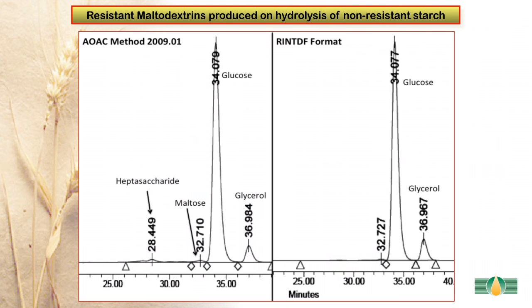Another problem with AOAC method 2009.01 is that under the incubation conditions employed, a resistant maltodextrin fraction is produced from non-resistant starch and this is measured as dietary fibre, but clearly is not dietary fibre. Under the incubation conditions of the rapid integrated total dietary fibre procedure, this oligosaccharide, a heptasaccharide, is not produced.